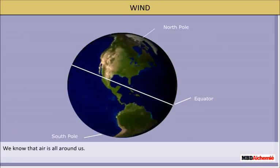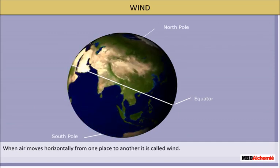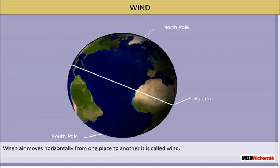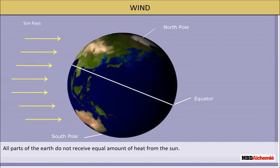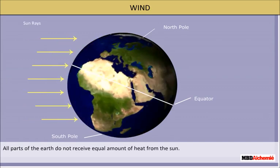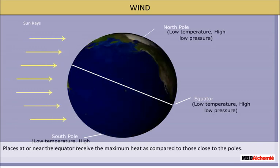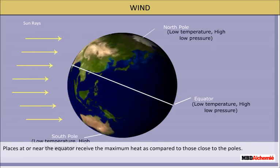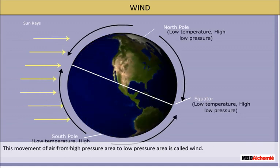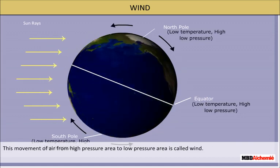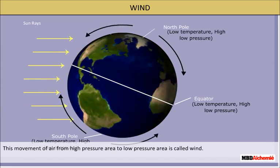Wind. We know that air is all around us. When air moves horizontally from one place to another, it is called wind. All parts of the earth do not receive equal amounts of heat from the sun. Places near the equator receive maximum heat as compared to the poles. This movement of air from a high pressure area to a low pressure area is called wind.